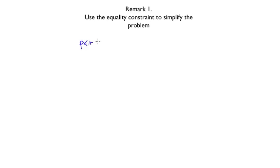At first sight, this problem looks much more complicated than the previous one since it involves two variables and this new equality constraint. But with a little bit of thinking and cleverness, we can transform this problem into the previous ones that we have been solving. The first remark is that you have to use the equality constraint to simplify the problem. The budget constraint says that Px plus Qy has to be equal to the wealth W.